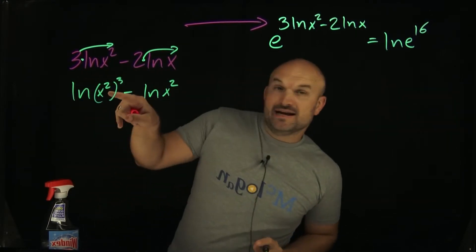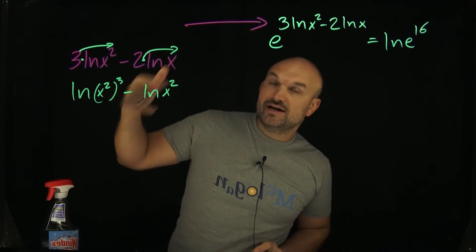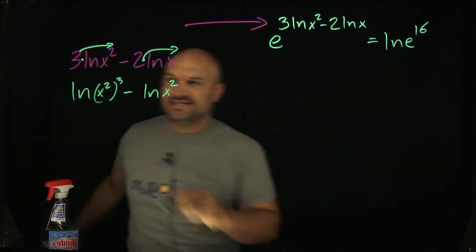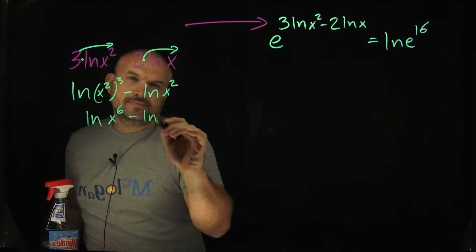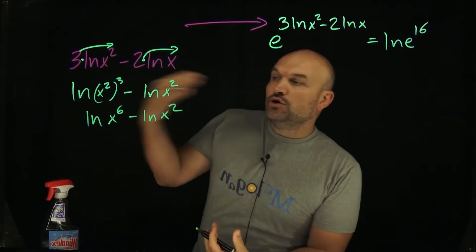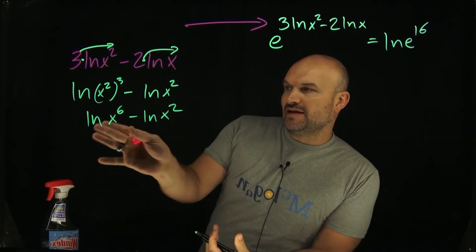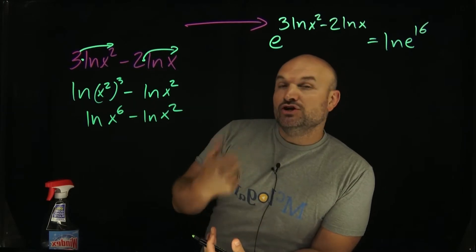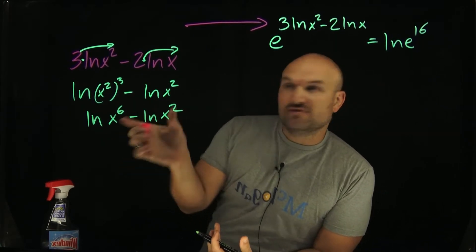Okay, so now you can simplify that, and remember the power rule of exponents, x squared to the cube power is going to be x to the sixth. And now, if you remember the quotient properties for logarithms, whenever you have a logarithm minus another logarithm, you can rewrite that as the quotient of your two arguments.